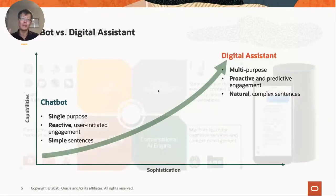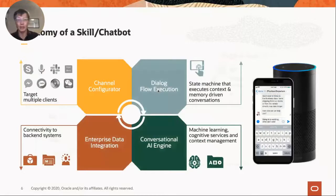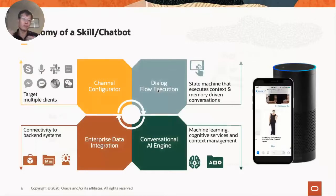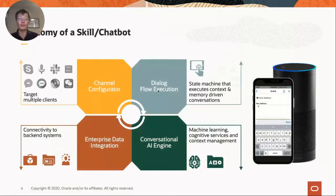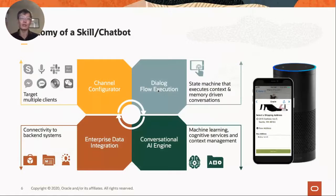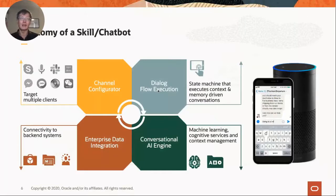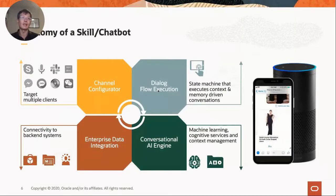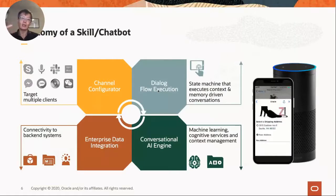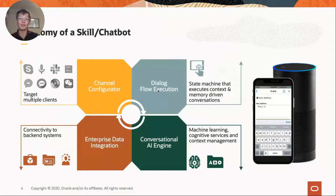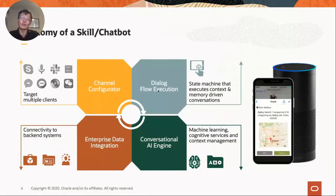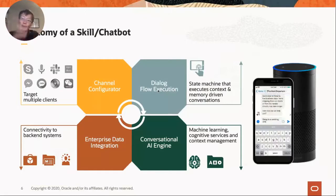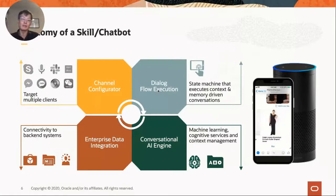Let's look at the anatomy of a single chatbot — what we now call a 'skill.' All chatbot platforms have four key components. The first is the channel configurator, which allows the chatbot to connect to multiple messaging applications — Microsoft Teams, Facebook, Slack, or even SMS. The second is a dialog flow execution engine, which executes conversations between the end user and the platform, driving the conversational experience and acting as a state engine.